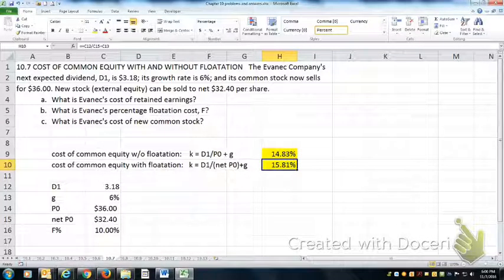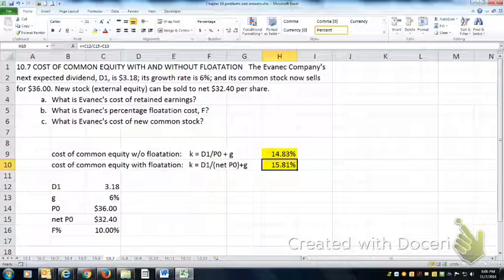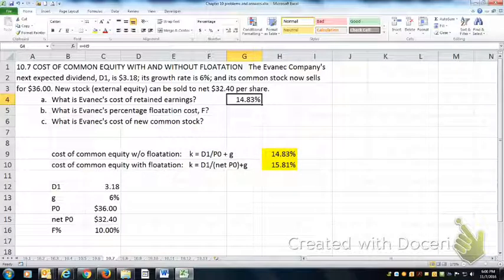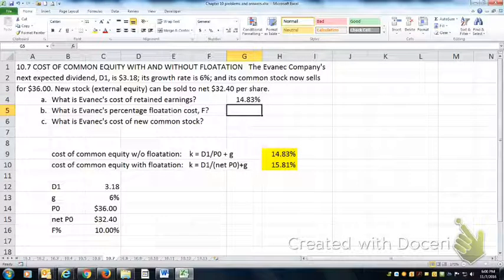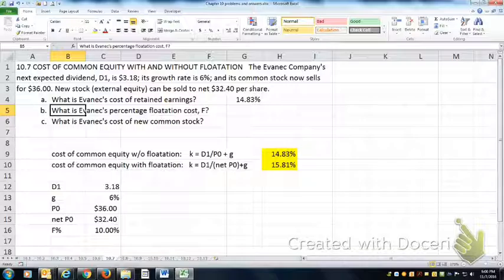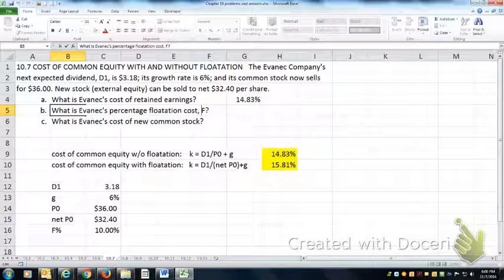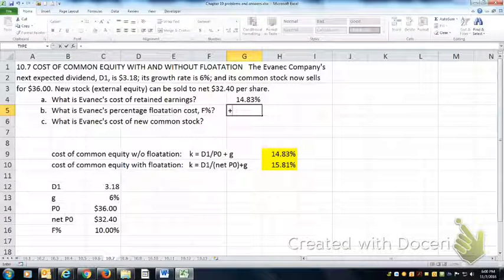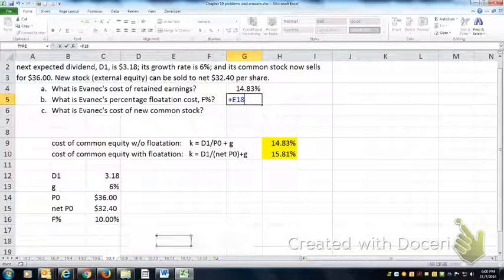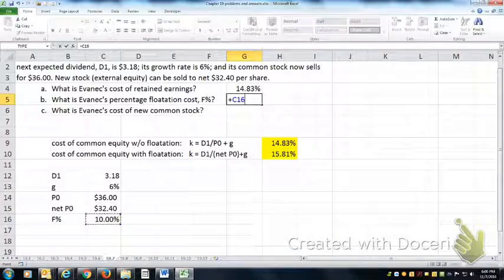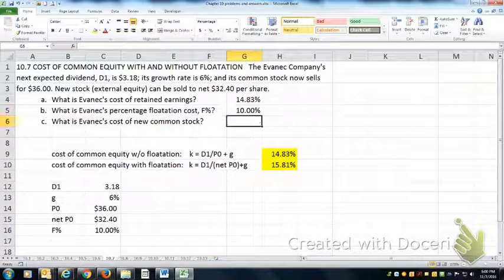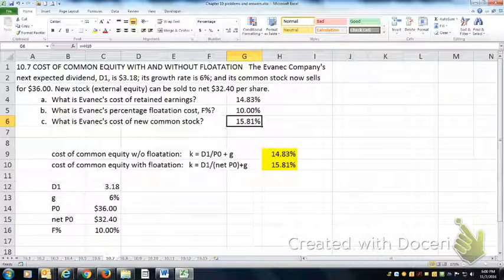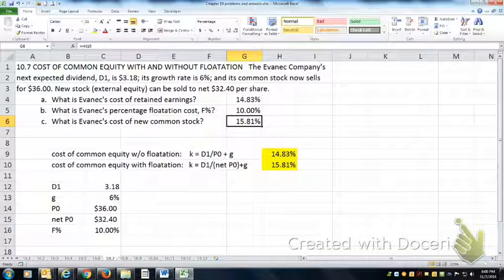So 14.83% without flotation - that would be the cost of retained earnings. The flotation cost percentage, which we ought to call F percent, not just plain F, would be 10%, which we computed down here. That's the commission per share. And the cost of new common stock, reflecting the cost of the commission, would be 15.81%.